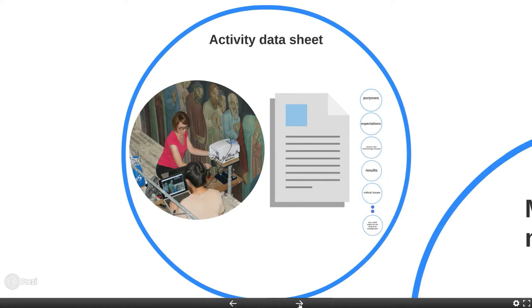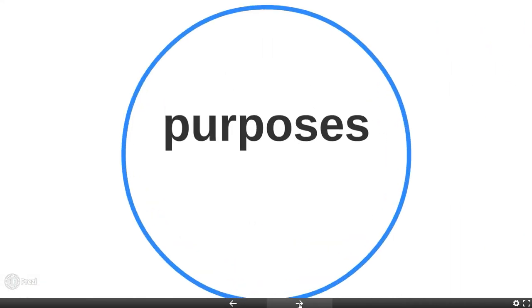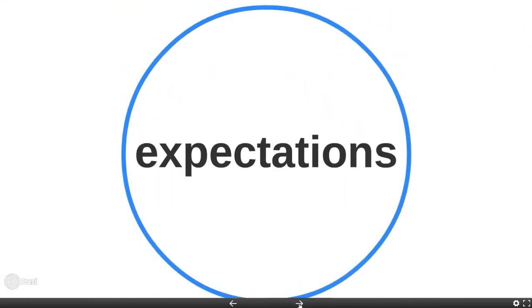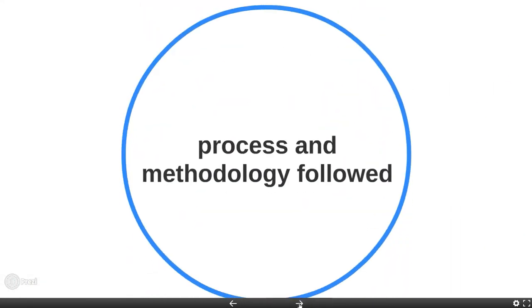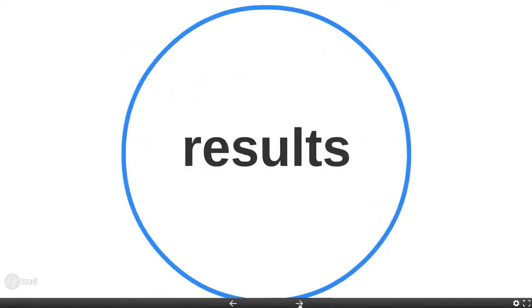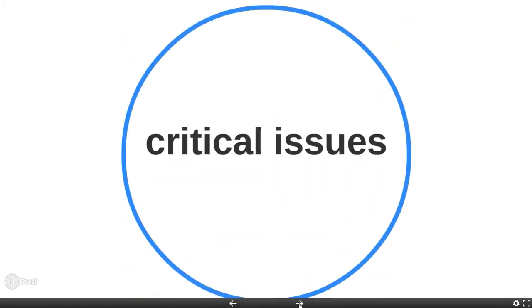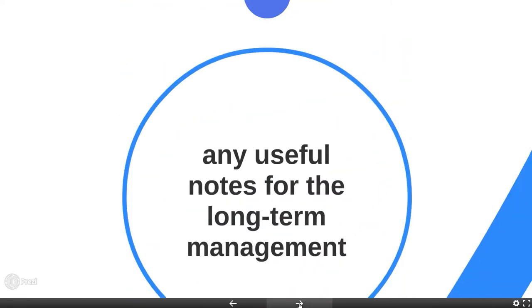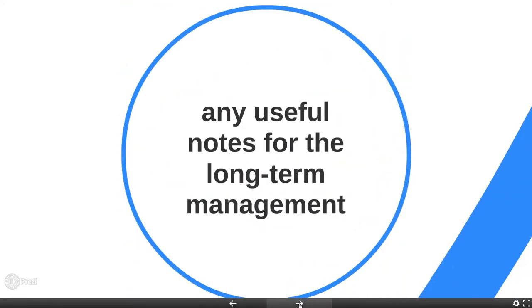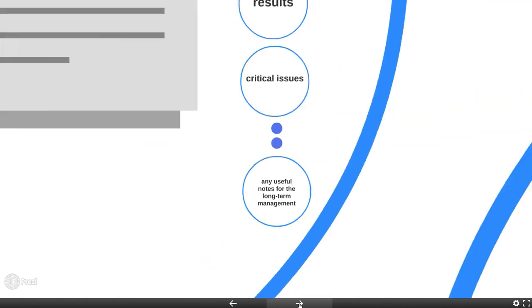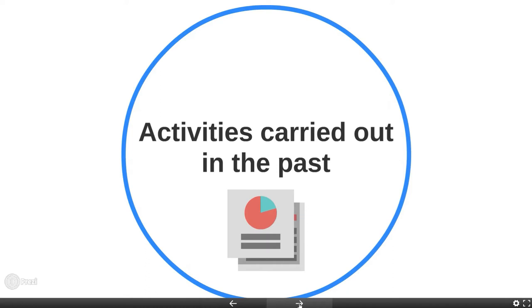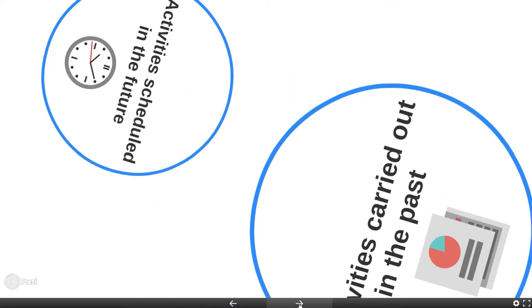For each activity, we complete a datasheet with information about its goals, the expected results, the methodology followed, and a description of the obtained results. Critical issues are recorded as well in order to improve the methodology in the future. In general, any note that could be useful in the long term for the management is entered in the activity record. We are now filling such records to describe ongoing activities, but we could use the system to schedule activities in the future, thus defining a management plan.